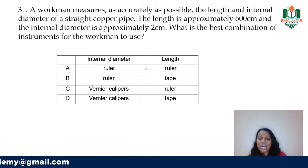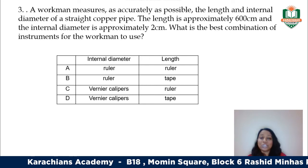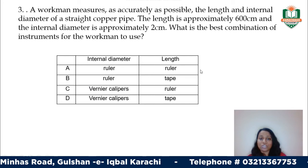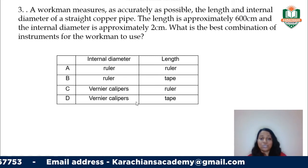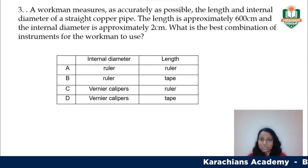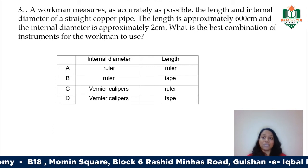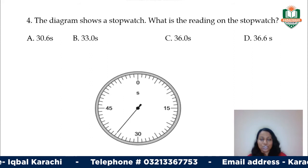This question says a workman measures as accurately as possible the length and internal diameter of a straight copper wire. The length is approximately 600 centimeters and the internal diameter is approximately 2 centimeters. What is the best combination of instruments? The length is 600 centimeters — less than a meter — and it's a straight copper pipe, so we can use a meter ruler. For the internal diameter of 2 centimeters, we can use a vernier caliper. There's no micrometer option here, so the only option is the vernier caliper with internal jaws. Your answer is C.